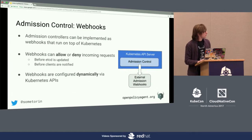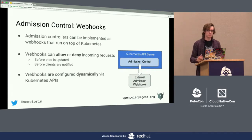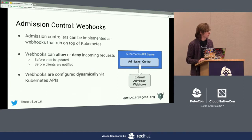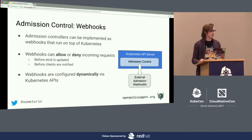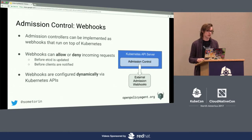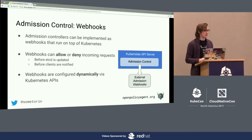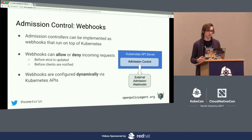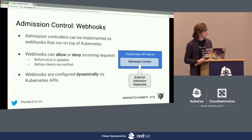The good news is that in 1.7 we now have external admission webhooks that you can use to run admission controllers on top of Kubernetes itself. The webhooks act just like regular admission controllers — they get a chance to allow or deny incoming write requests before etcd is updated and before any clients are notified. You're able to externalize or decouple policy enforcement from the core of Kubernetes.